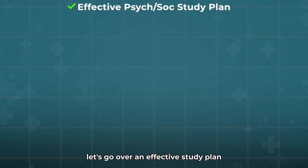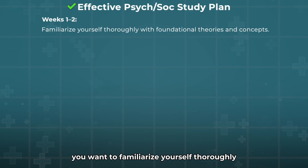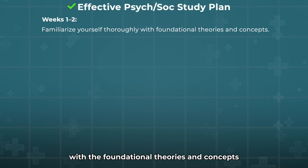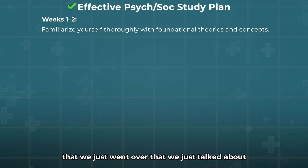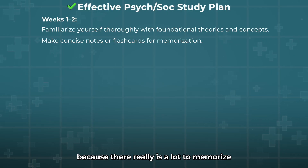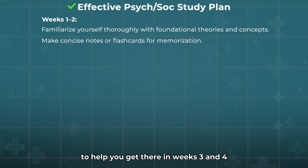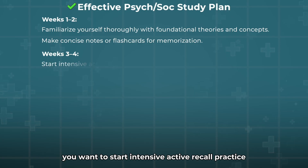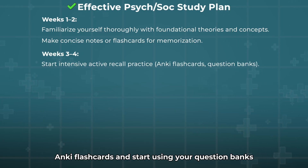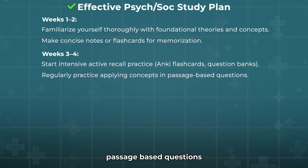Let's go over an effective study plan for approaching the psych-soc section. In the first couple of weeks, familiarize yourself thoroughly with the foundational theories and concepts we just went over. Make concise notes or flashcards for memorization — think Anki or spaced repetition to help you get there. In weeks three and four, start intensive active recall practice — again, Anki, flashcards — and start using your question banks. Regularly practice applying concepts in passage-based questions.